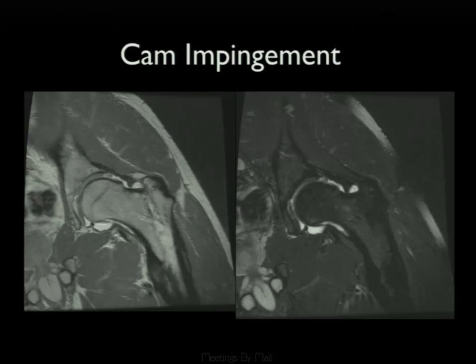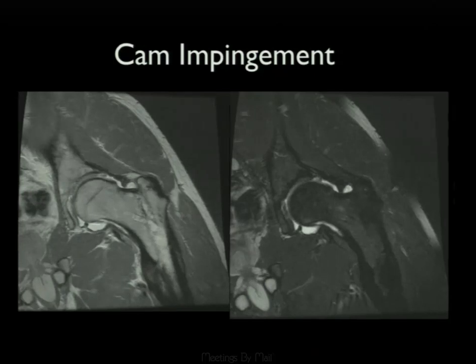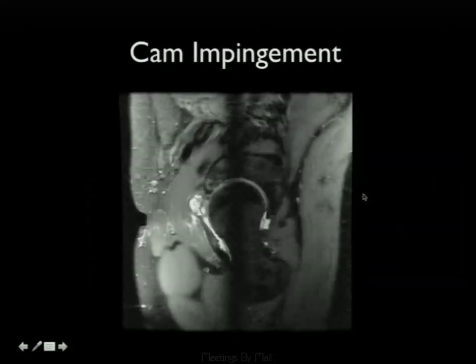In this CAM type deformity, the labrum is degenerated and there is a chondrolabral separation. Contrast may be getting into the deep layer of the cartilage, which may represent a delamination. These types of labral tears often result in complex paralabral cysts seen anteriorly—another example of CAM impingement with a complex paralabral cyst.